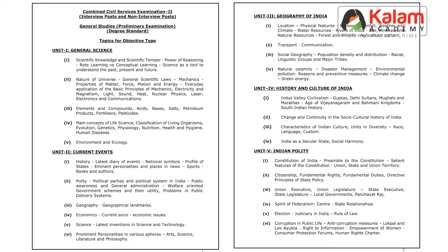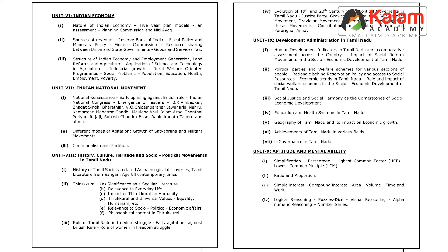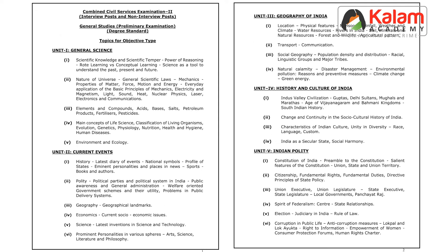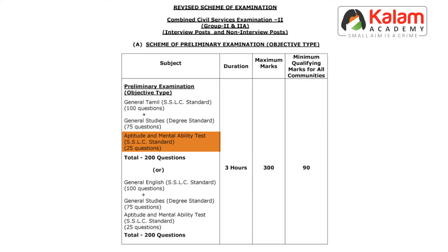General Studies covers History, Geography, Economics, Political Science, and Indian Constitution — Unit 8, Unit 9, Unit 10. It also includes Aptitude and Reasoning, Current Affairs, and Indian National Movement. Overall there are over 10 topics in Indian History under General Studies, with 25 questions for Aptitude and Reasoning and 75 questions for General Studies.